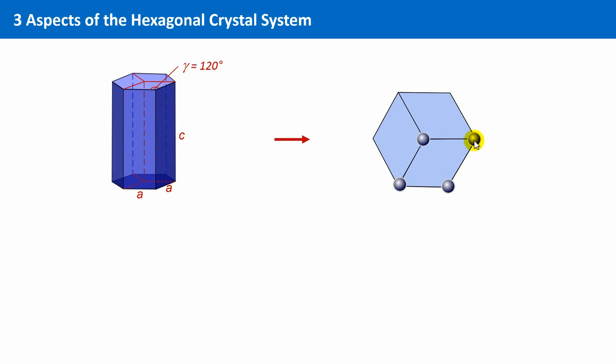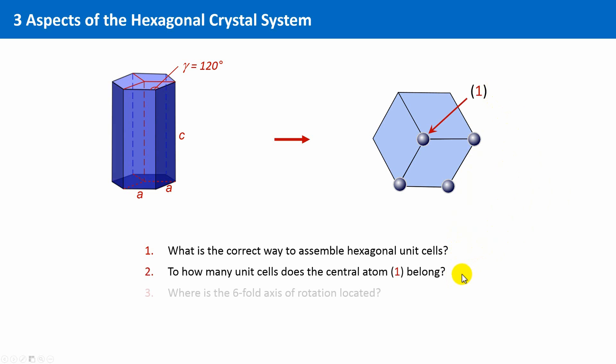Now we want to answer the following three questions. First, in which way are hexagonal unit cells assembled correctly? Second, to how many unit cells does this central atom 1 belong? And third, where is the six-fold axis of rotation located?